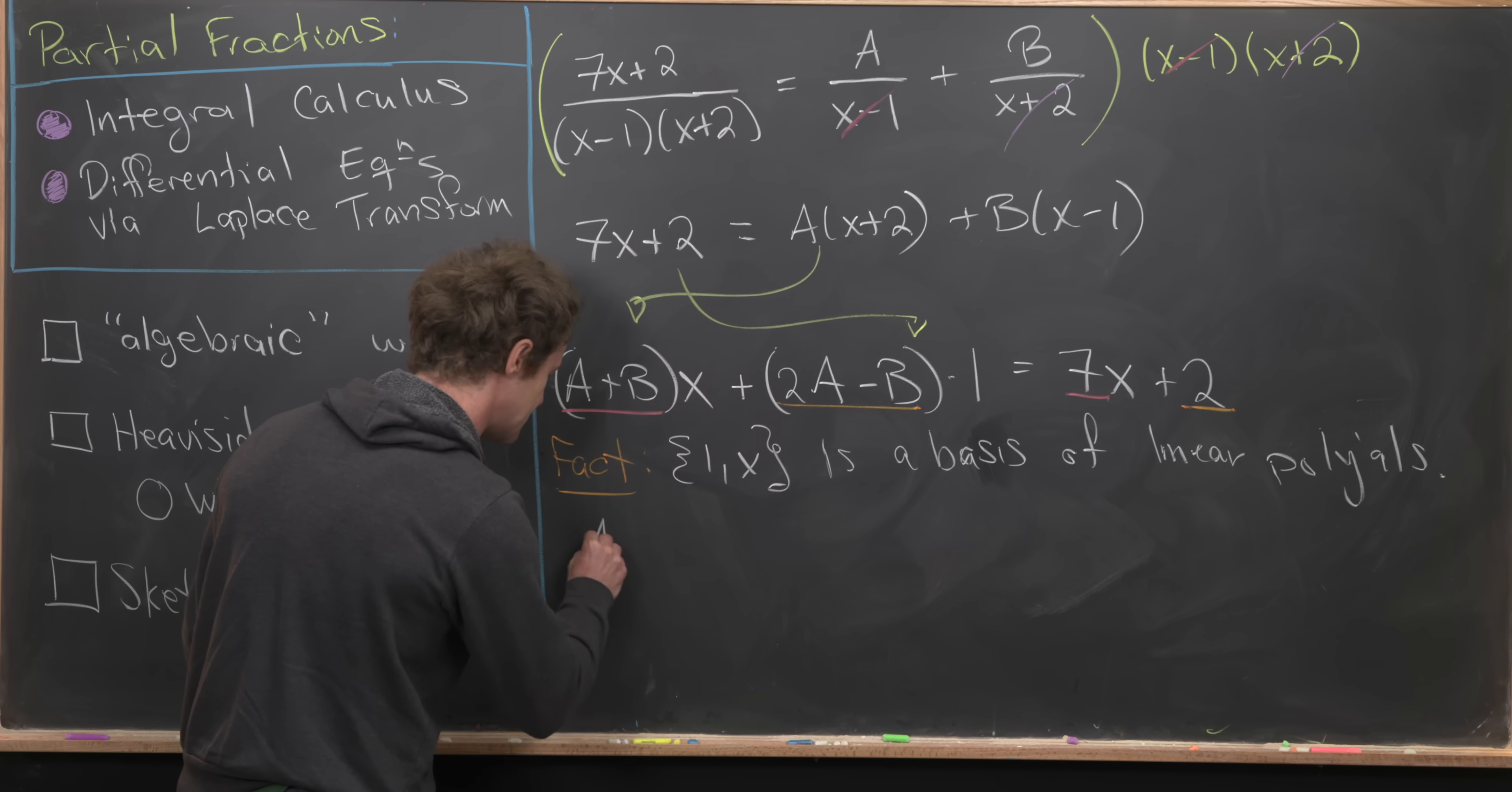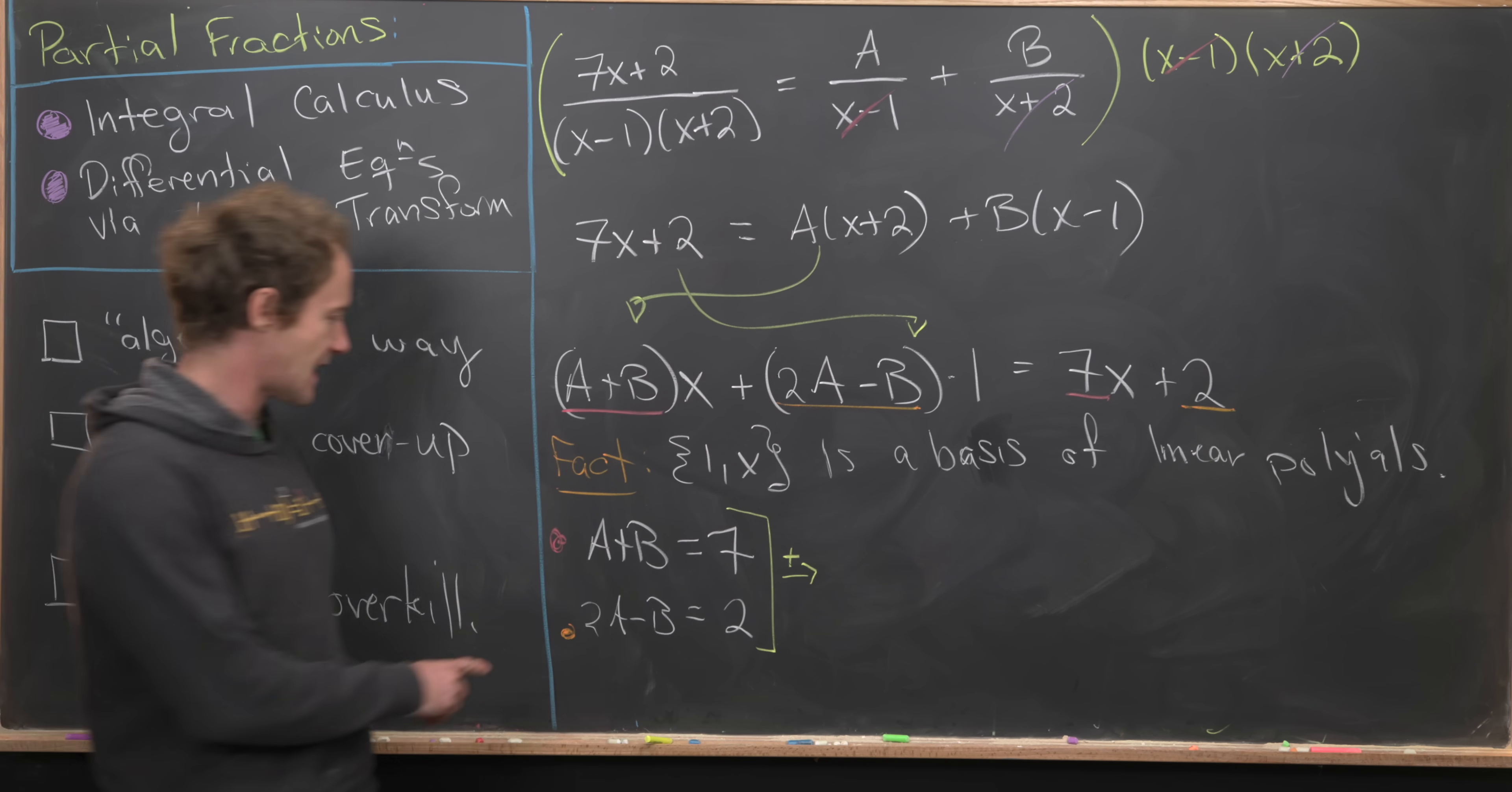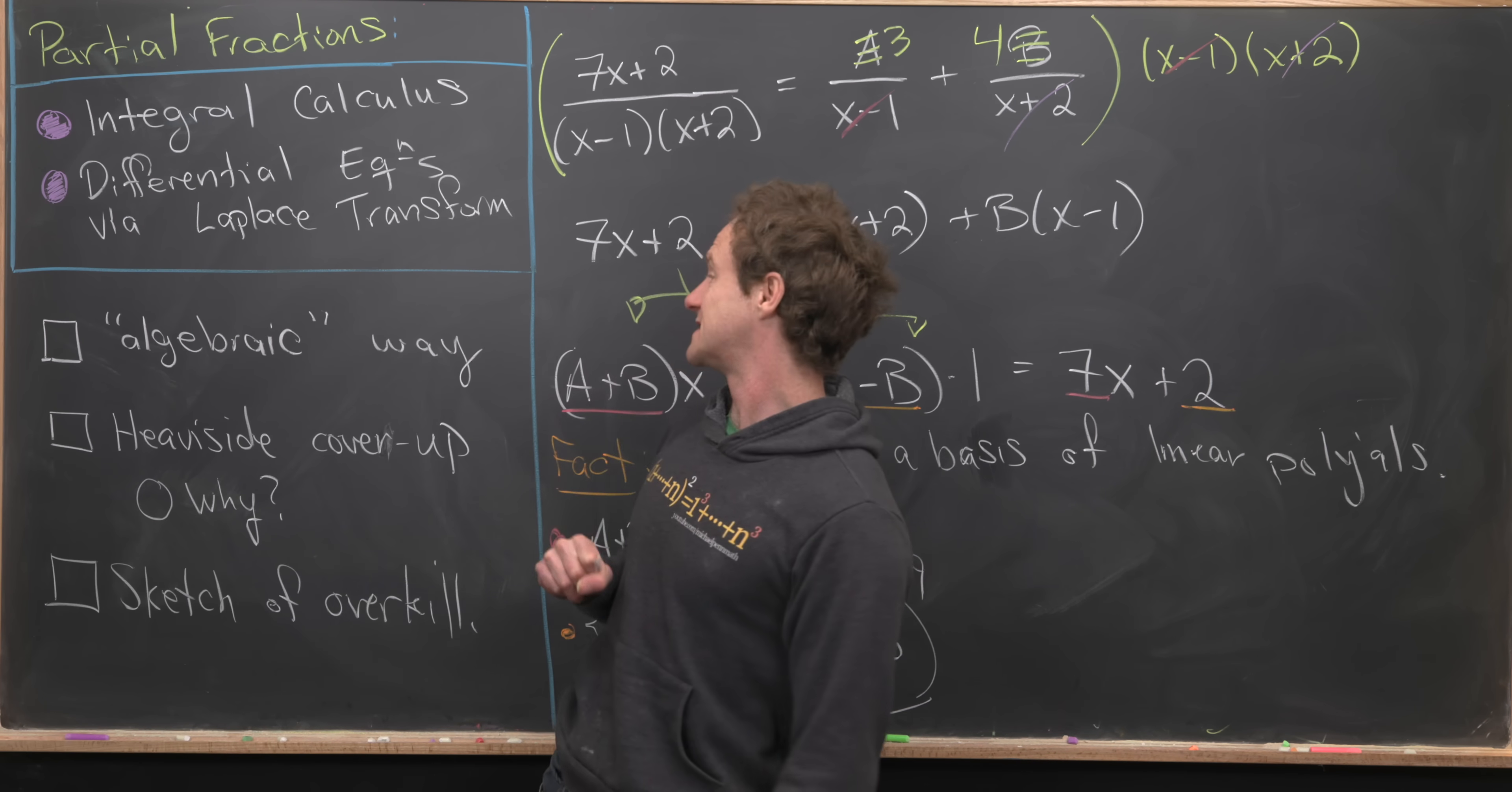That'll give us a system of equations: A plus B equals 7, and 2A minus B equals 2. I notice that I have a minus B here and a plus B here, so I can add these two equations and the B term will be canceled. That gives me 3A equals 9, which tells me that A equals 3. Then plugging A equals 3 into any of these equations nets us B equals 4. Now we've done this the algebraic way.